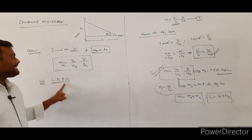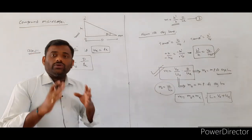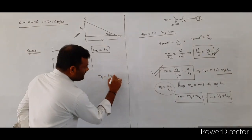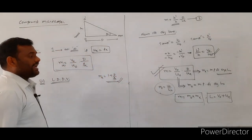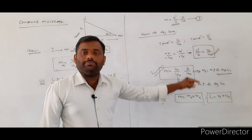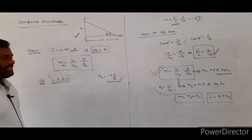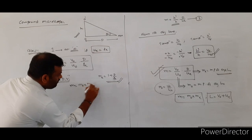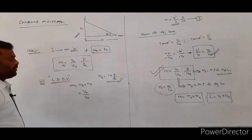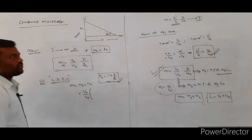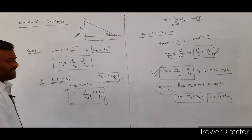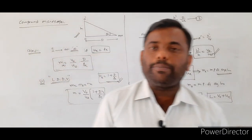Case 2: whenever the final image is formed at the least distance of distinct vision, from the simple microscope derivation the magnifying power of the eyepiece Mₑ = 1 + D/Fₑ. So the magnifying power of the compound microscope is M = M₀ × Mₑ = (V₀/U₀)(1 + D/Fₑ). These are the expressions for the magnifying power of the compound microscope.